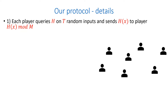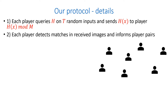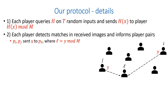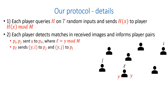Now we describe the details of our protocol. First, each player queries the random oracle on t random inputs and sends images of the form h(x) to player h(x) mod m. Then, each player detects matches in the received images and informs pairs of players that have a matching image. In the following example, players pi and pj send the image y to player pl, where l is y mod m. Then, player pl informs players i and j that they have a matching image, the image y.